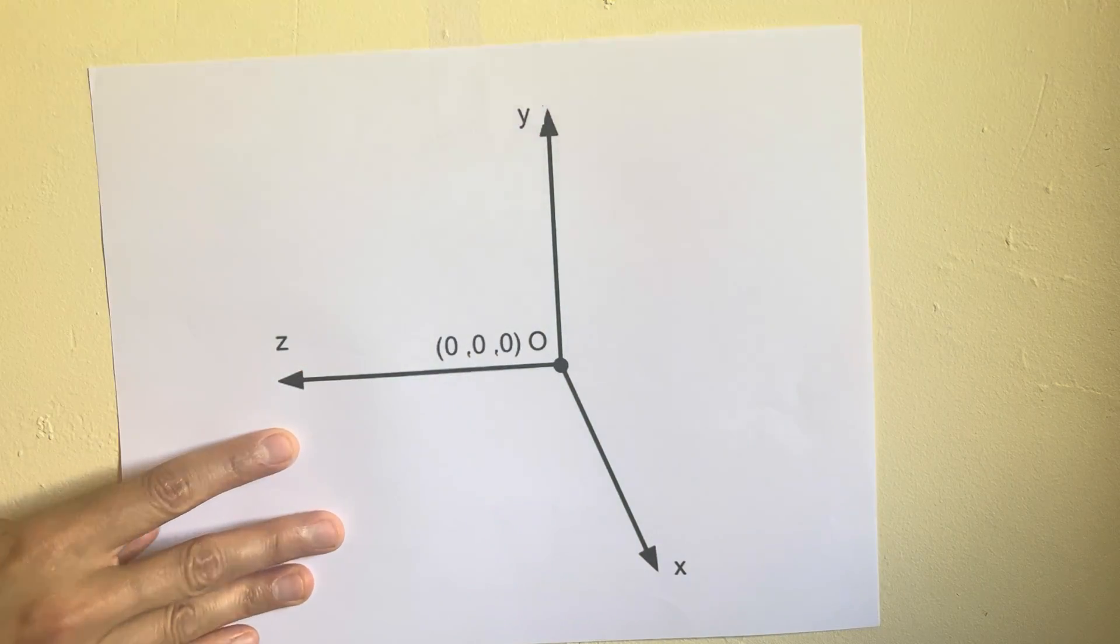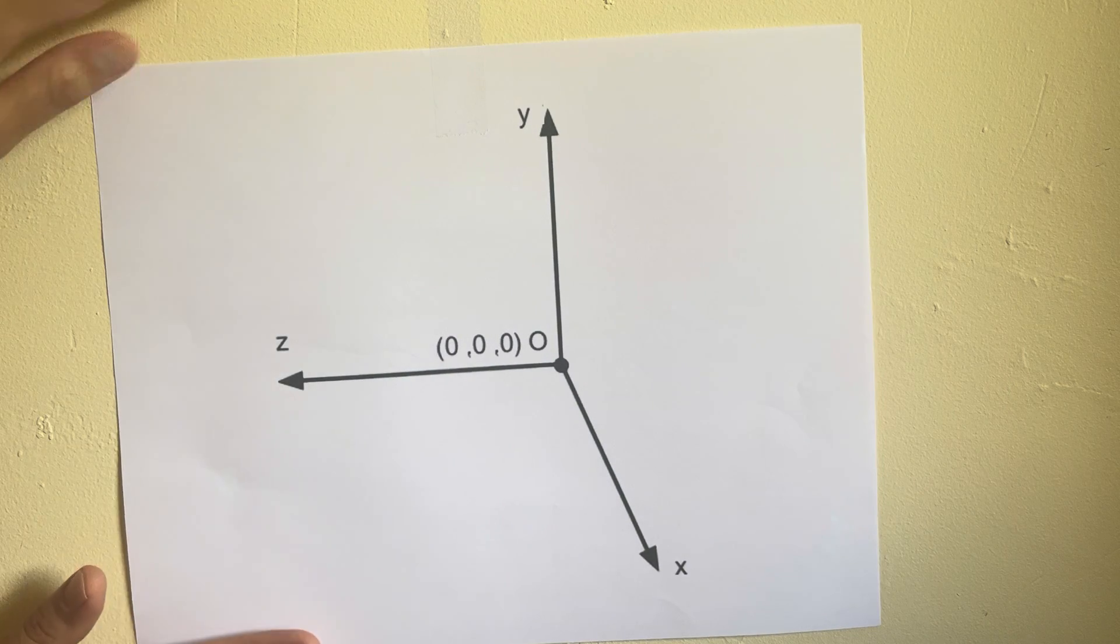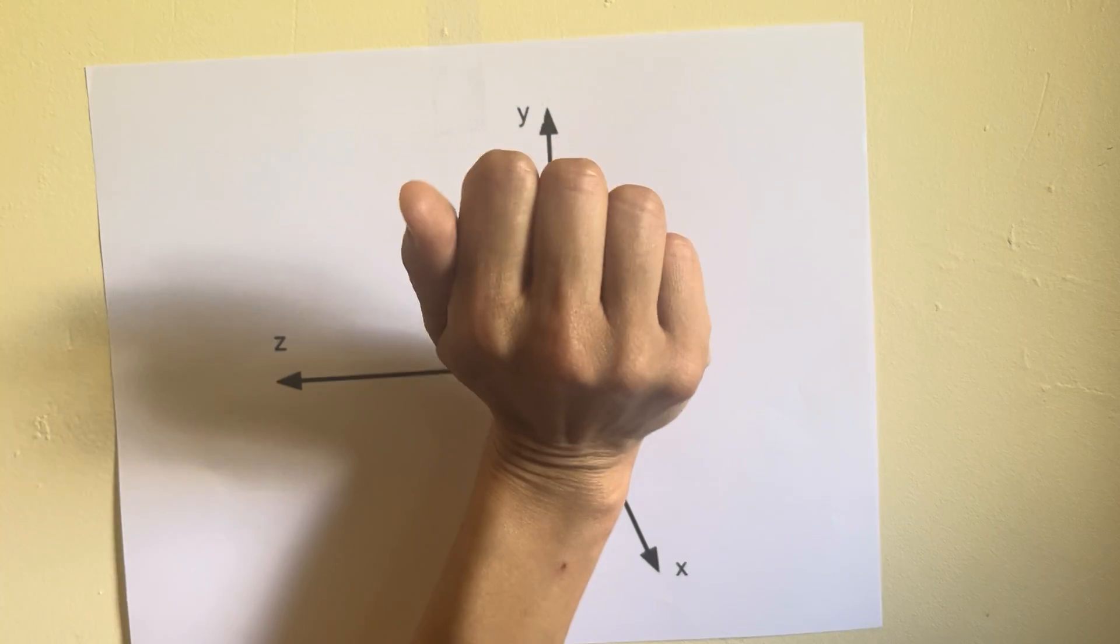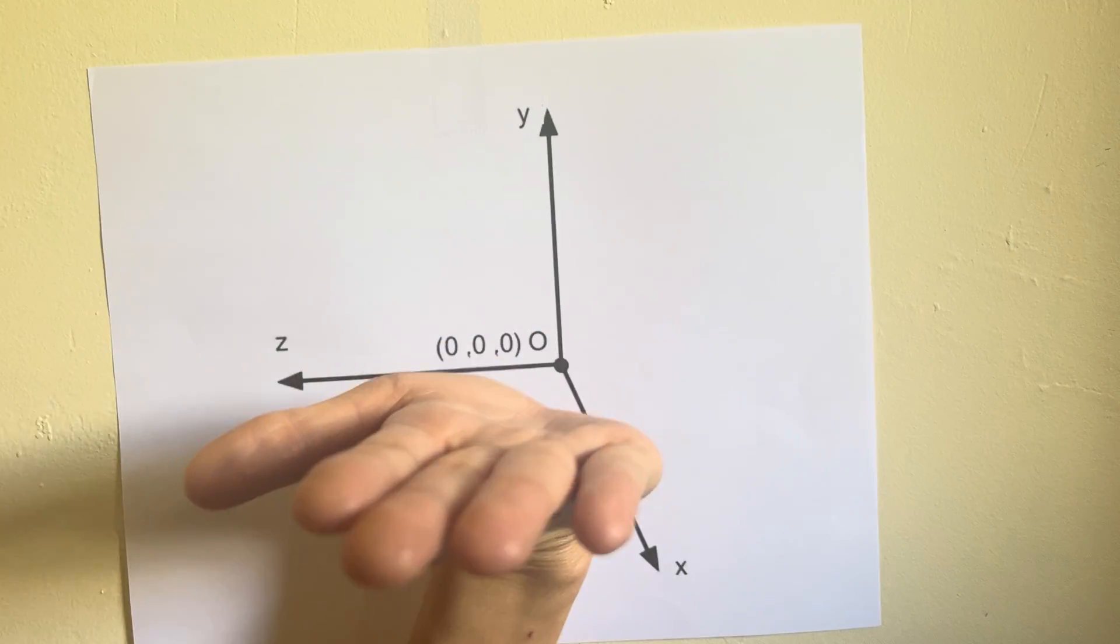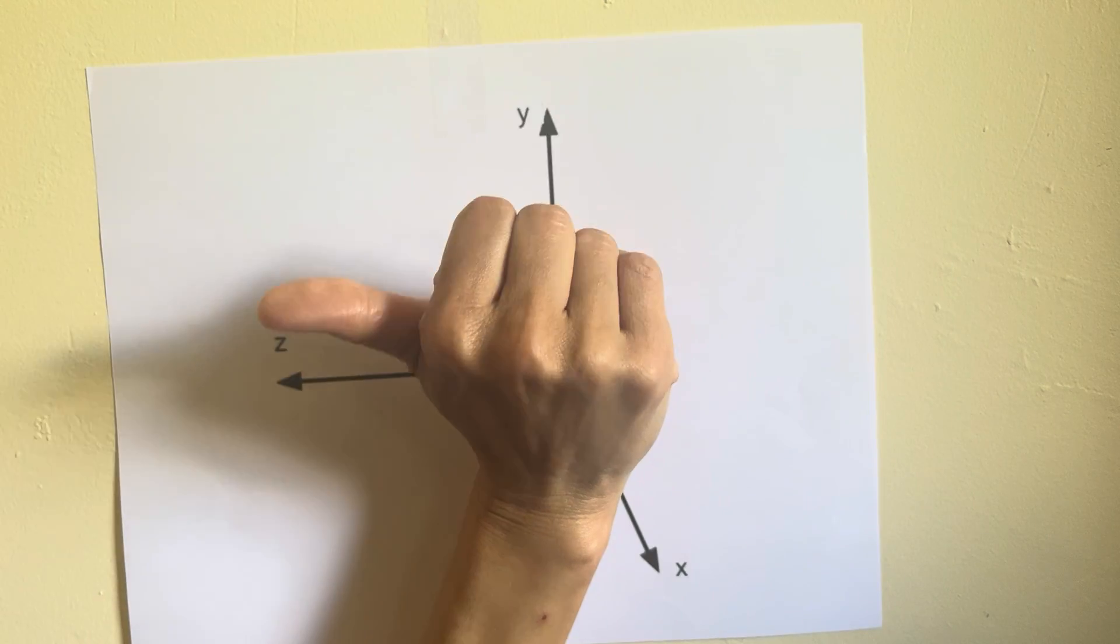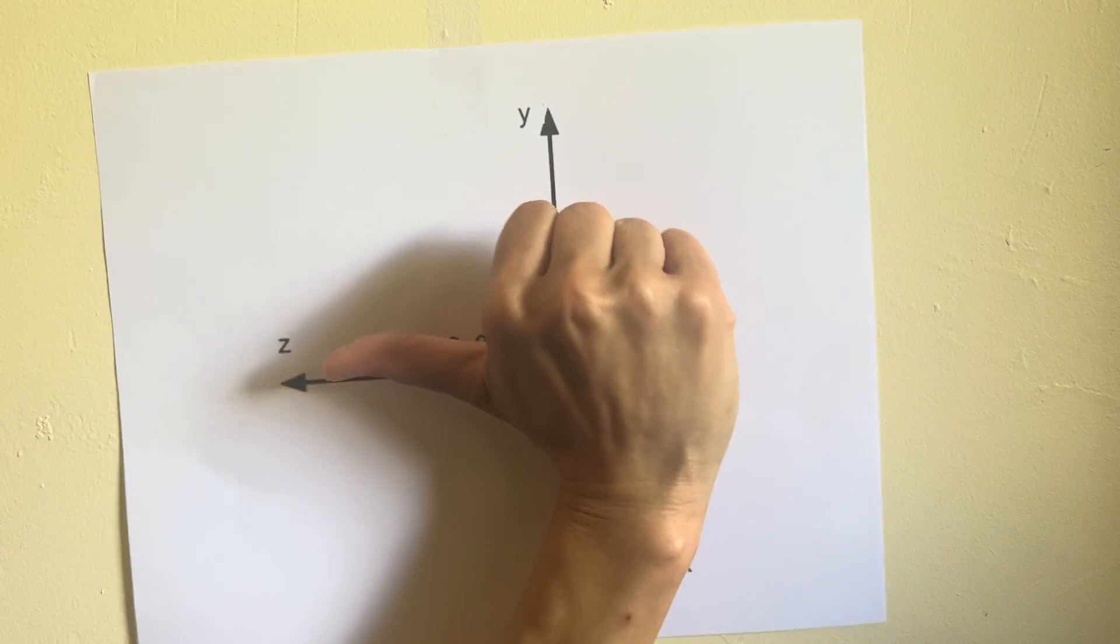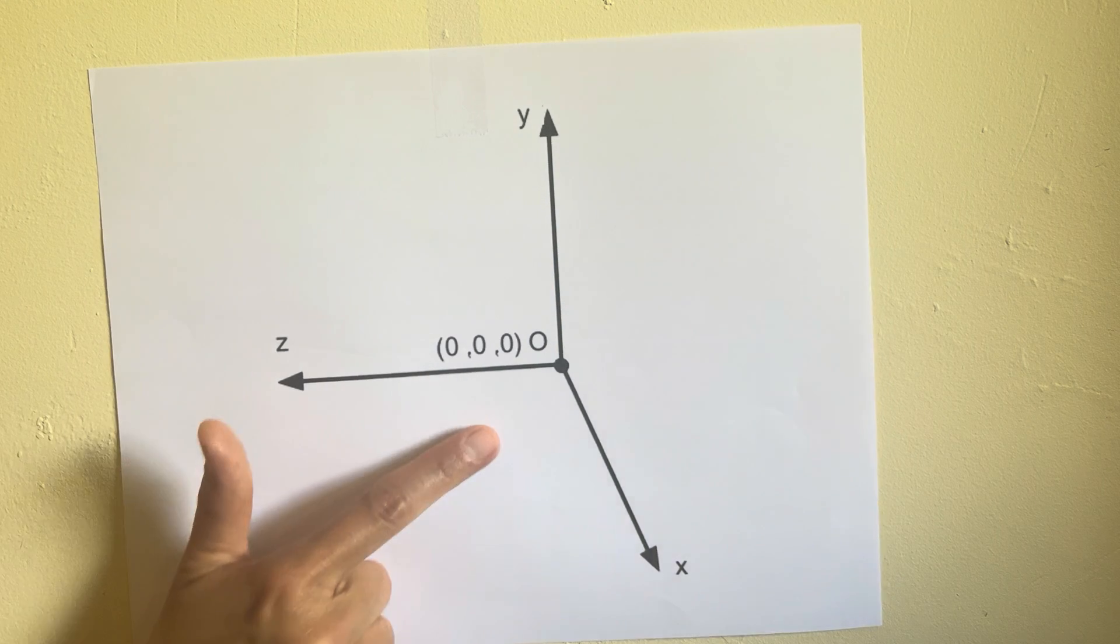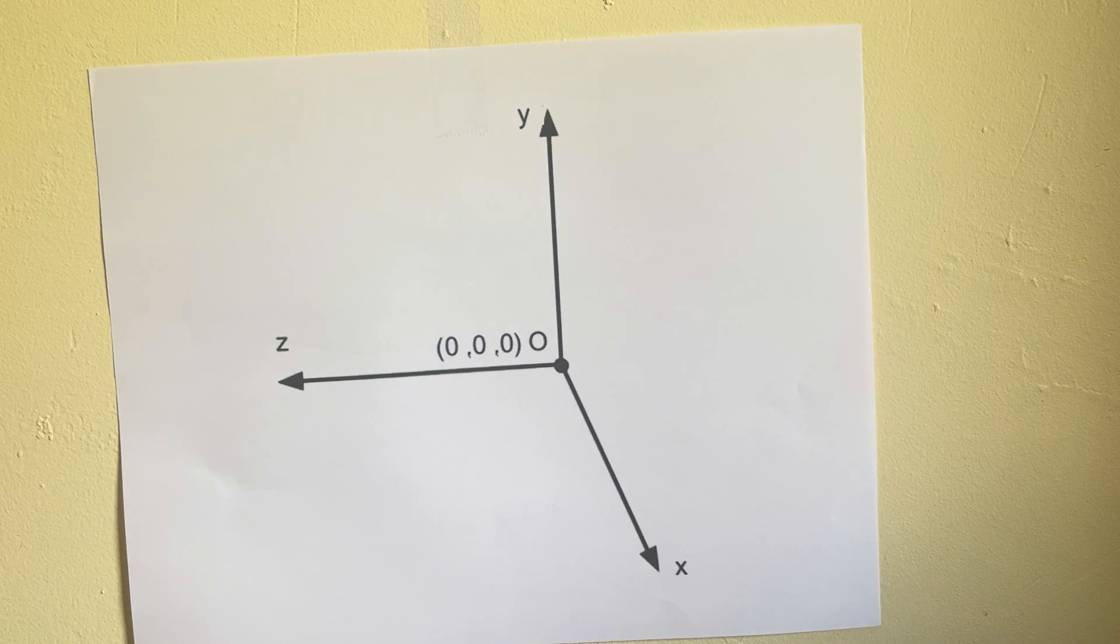And one last example. Now again, plus x is pointing out of the page, plus y is pointing up. So my fingers will point out of the page, my palm will point up. I imagine folding plus x into plus y, and my thumb points to the left along plus z. So this is, again, a right-handed coordinate system.